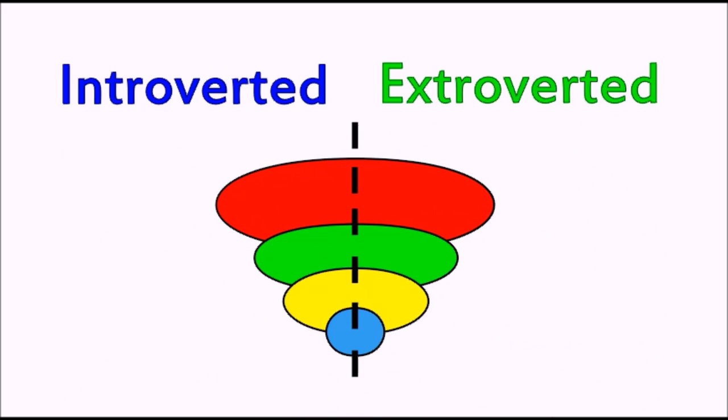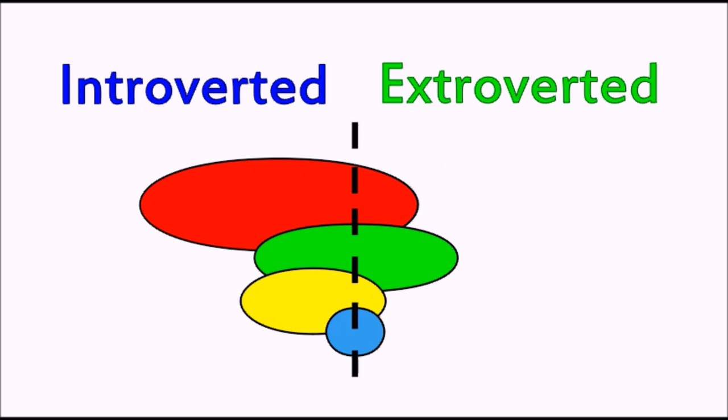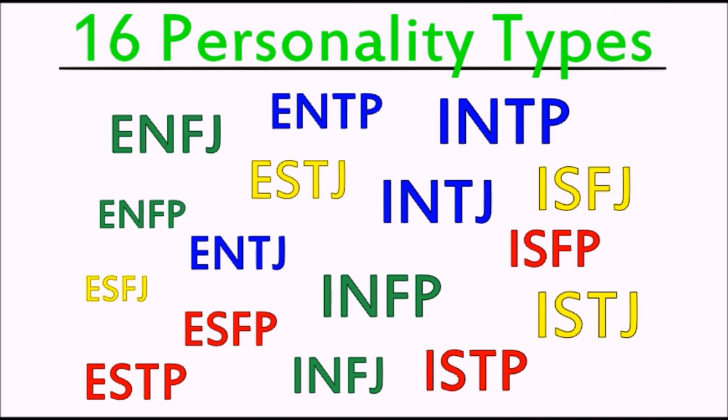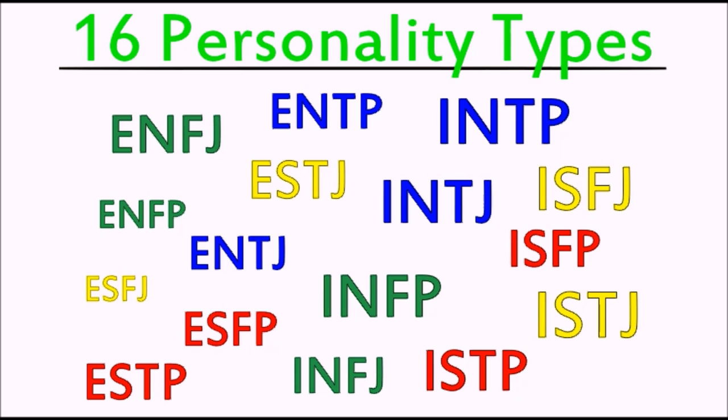Additionally, each function is either introverted to help with the internal world or extroverted to help with the external world. When the possibilities of function order and direction are considered, you can quickly discover that there are 16 possible combinations, and this is where we get the 16 different personality types.